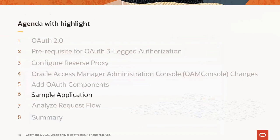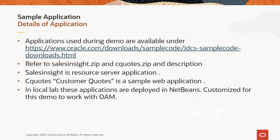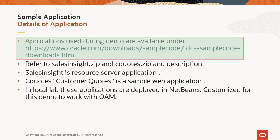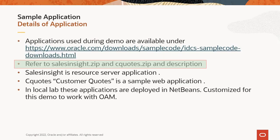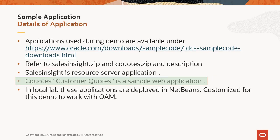Moving on to the next topic: the sample application. During this section, we'll learn more about the application and see how it works. The sample application used in this demo is a customized version of Sales Insight and Seacoats, both available on the link in the slide. These applications are intended to be used with Oracle Identity Cloud Service (IDCS). The Sales Insight application works as a resource server, and Seacoats is a web application client. Let us see how it works with OAM.